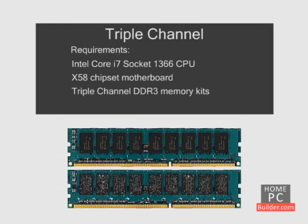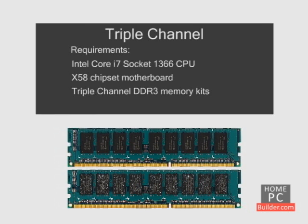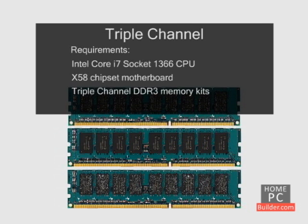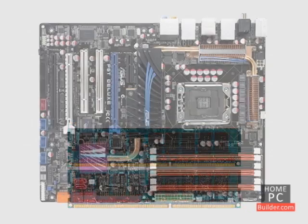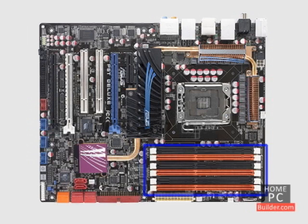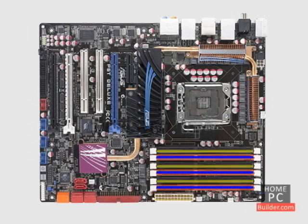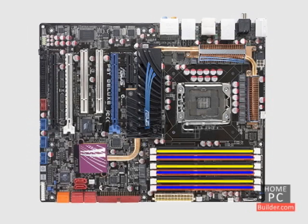Intel Socket 1366 Core i7 CPUs and motherboards with Socket 1366 can use the new triple-channel DDR3 memory kits. These motherboards have six RAM slots, so you can install three RAM sticks and still have three more memory slots available to add memory in the future and keep triple-channel enabled.